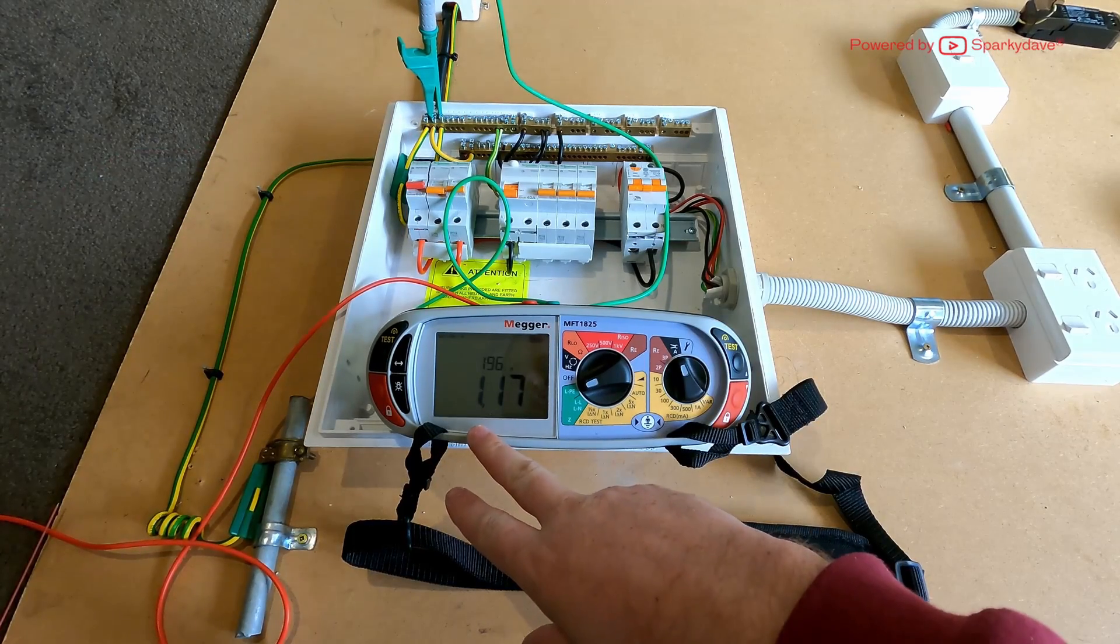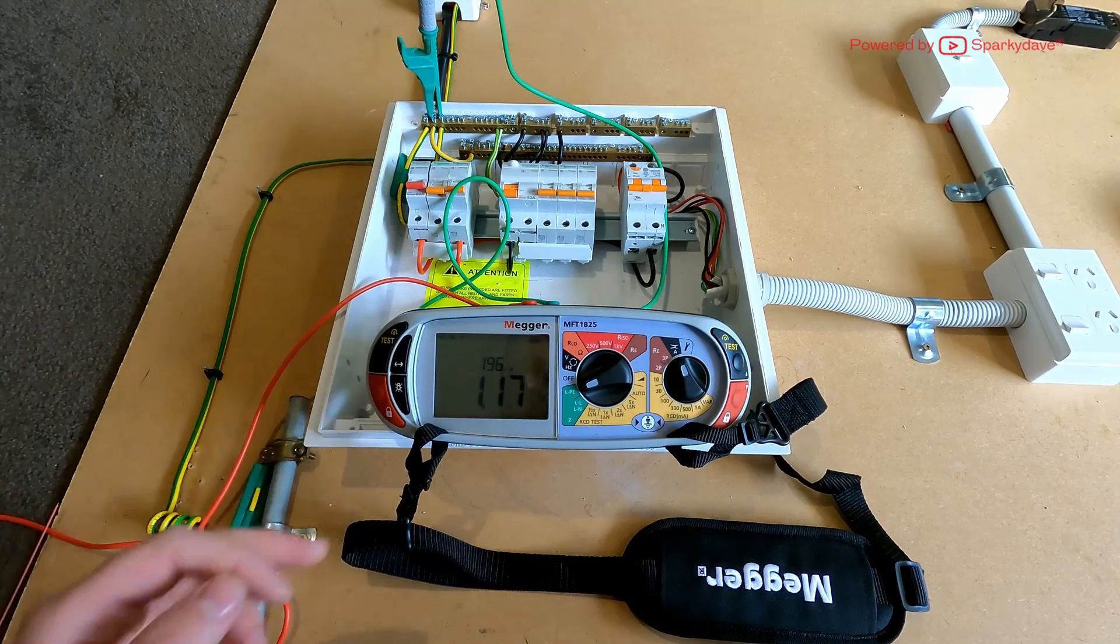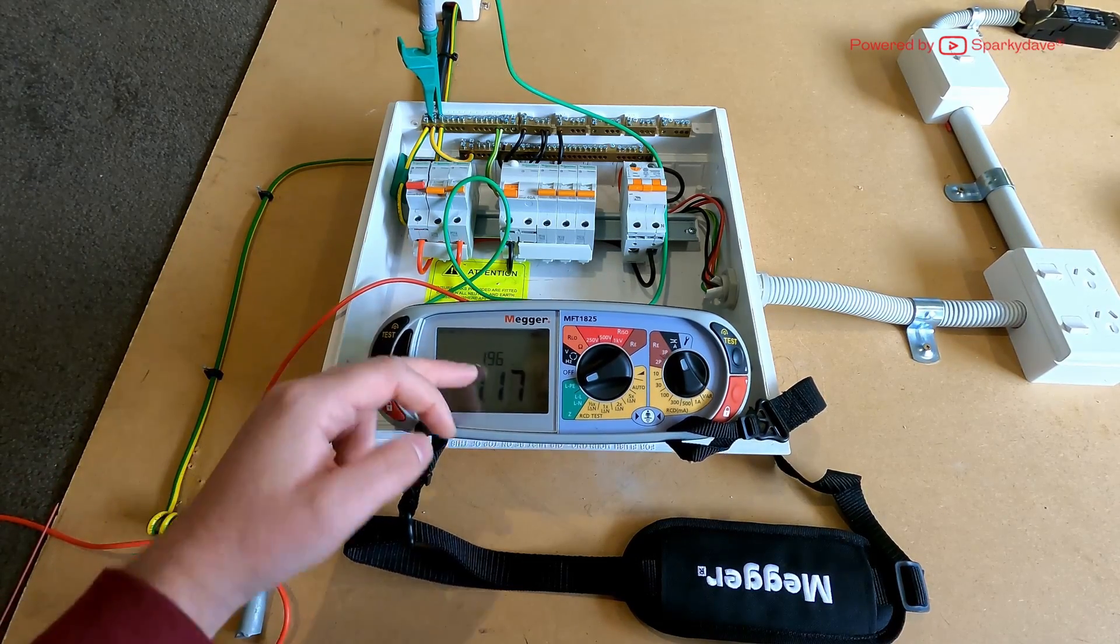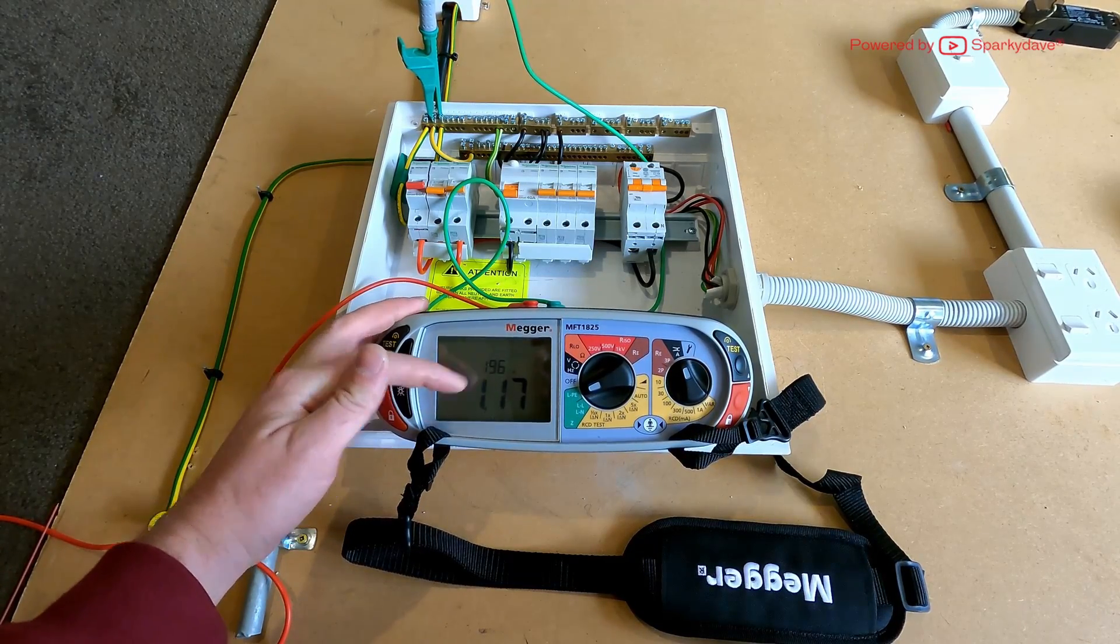This reading here that we've come up with is our impedance, and then the one above it is our prospective short circuit current. So that is just voltage over impedance, so 230 divided by 1.17 equals 196 amps.